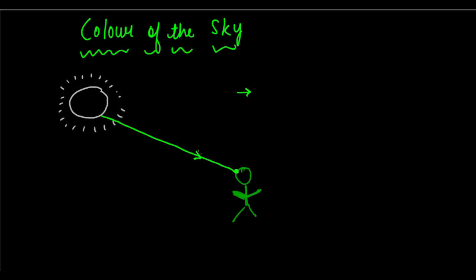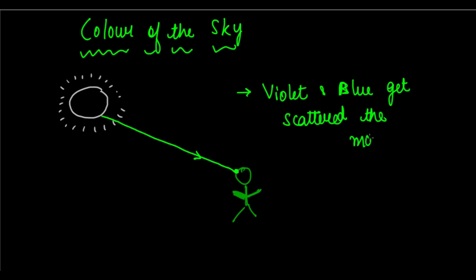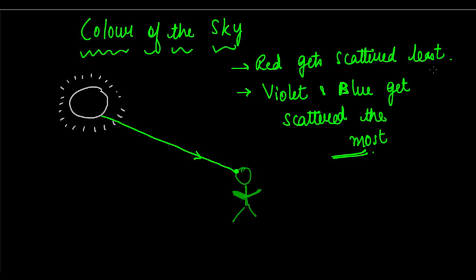Violet and blue get scattered the most. These two colors get scattered the most because they have the lowest wavelengths. Due to the lowest wavelength, they are bent or scattered the most during any scattering process. Red gets scattered the least.